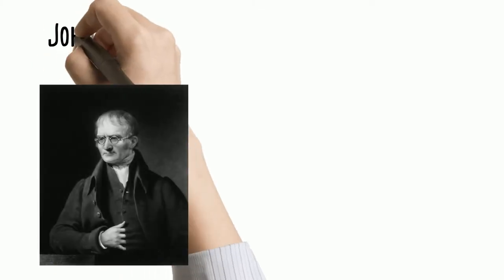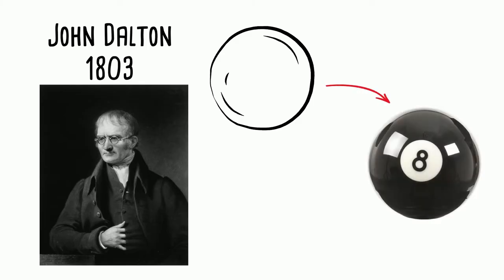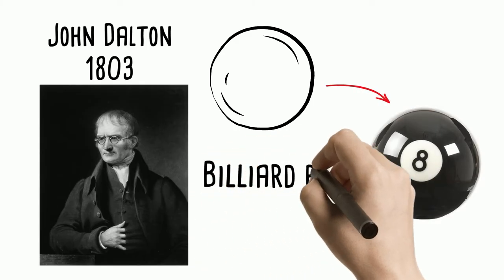It was followed by John Dalton in 1803 when he envisioned the atom as solid, hard sphere like a billiard ball. He called it the billiard ball model.